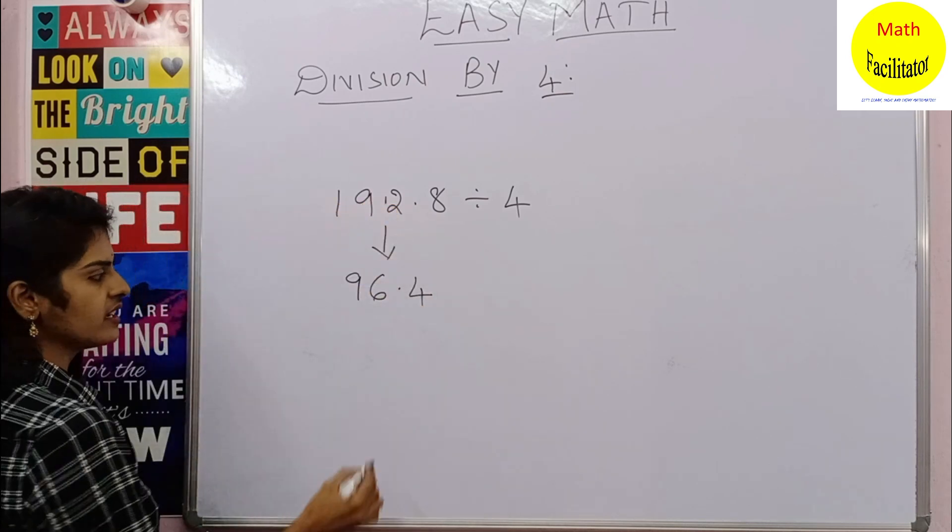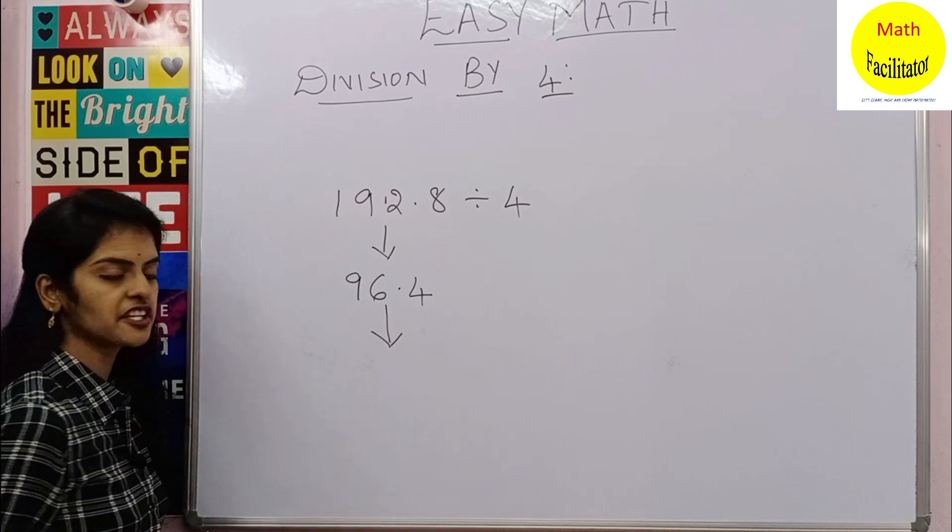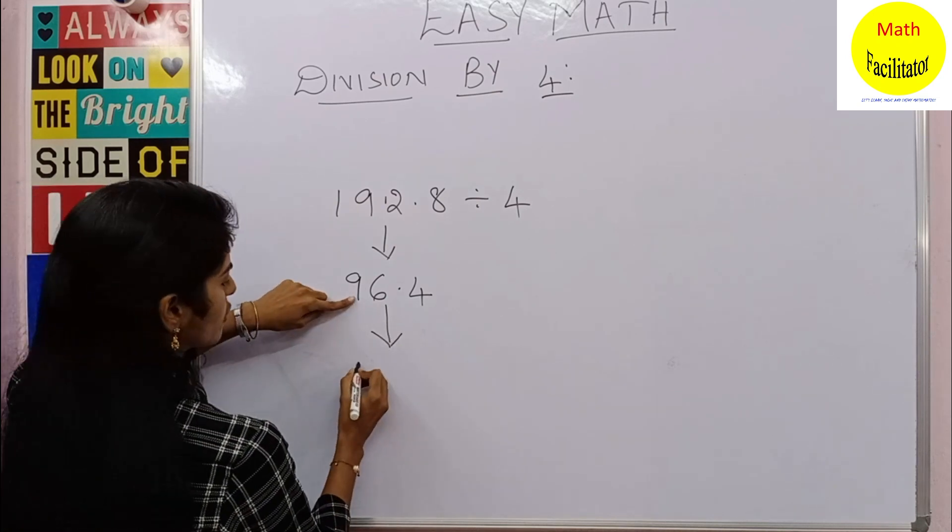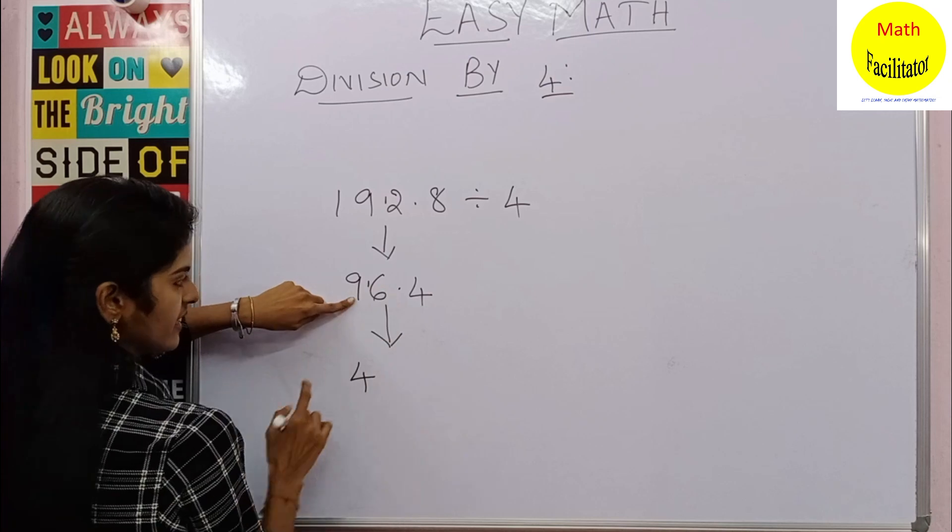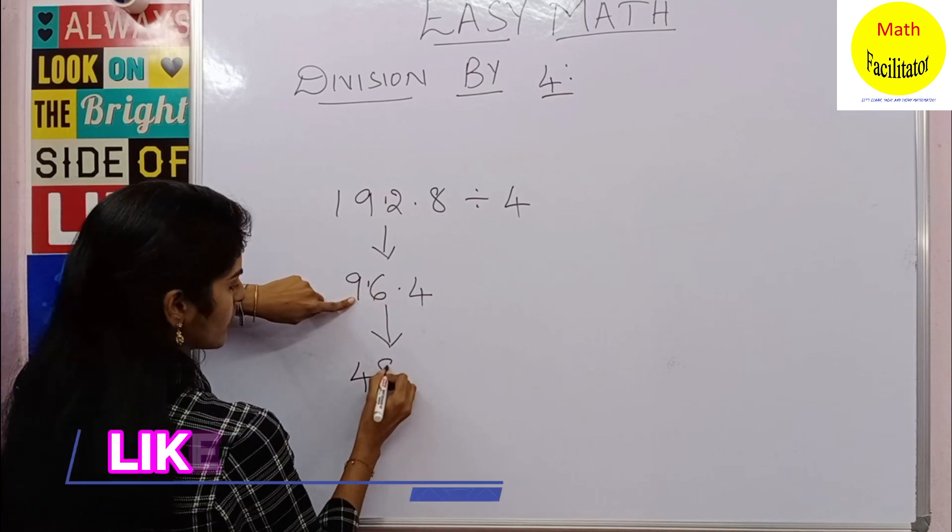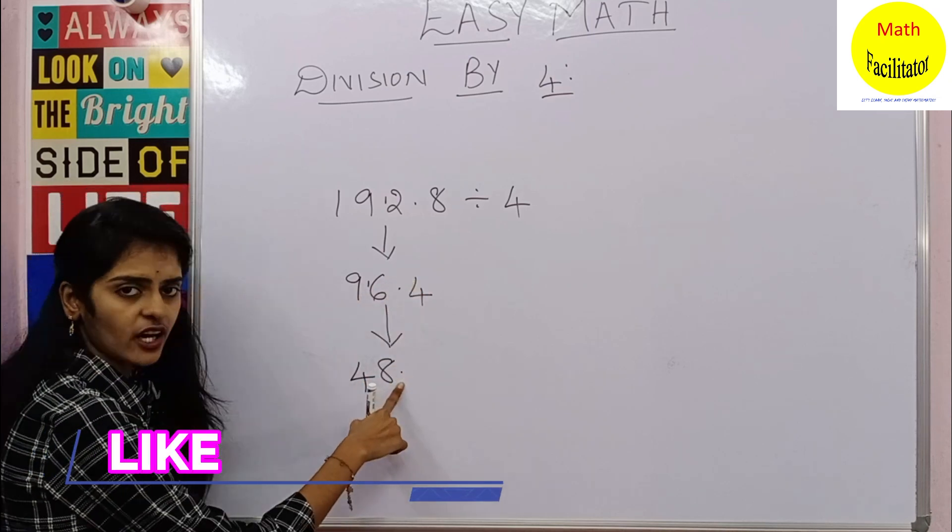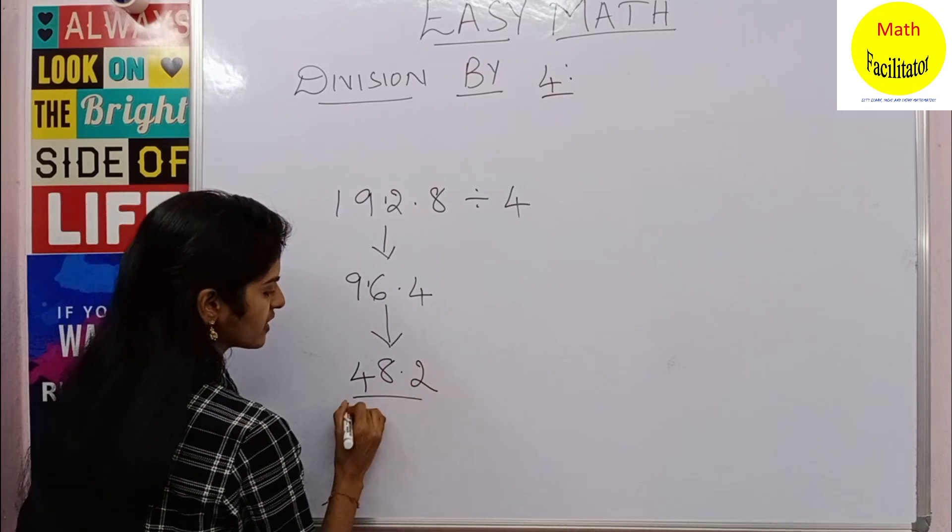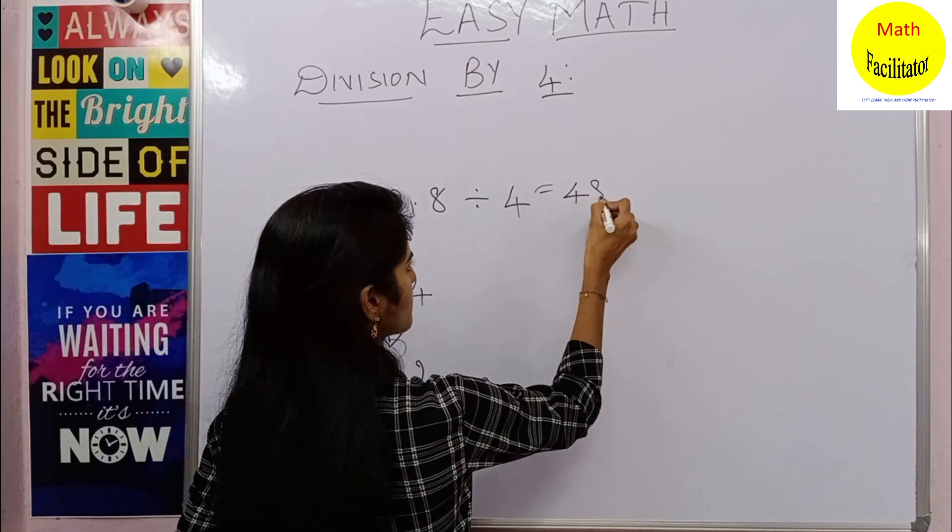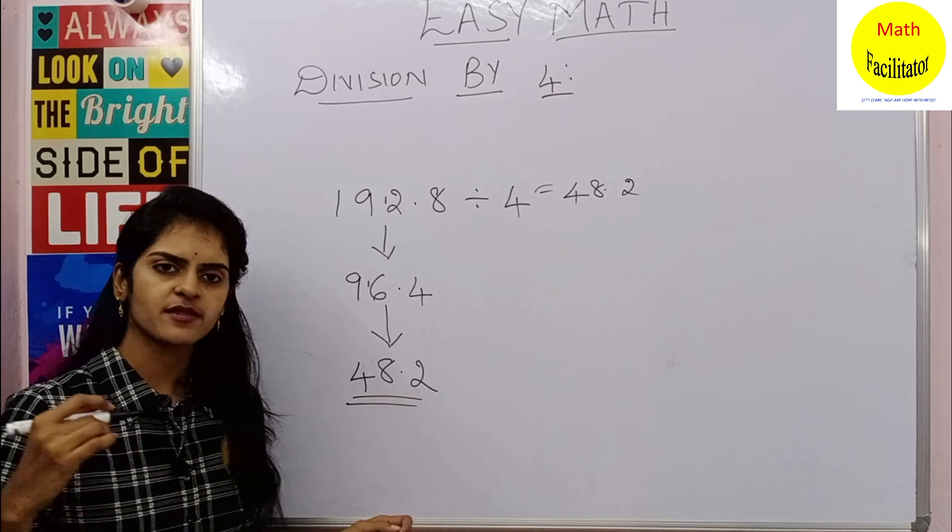So for the last time again you have to divide by two. So two fours are eight, one is reminding. Now this is 16 now. Two eights are sixteen. Bring the decimal point down and two twos are four. So the answer is 48.2.